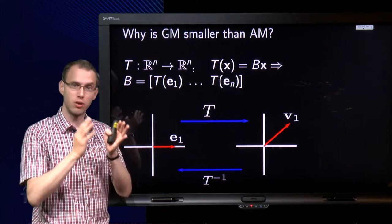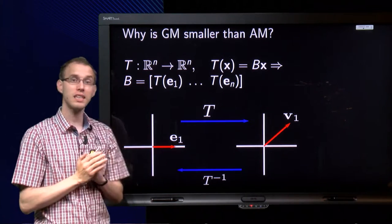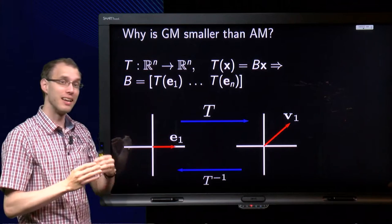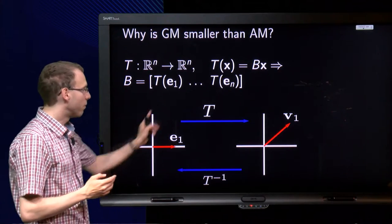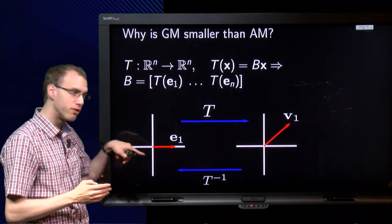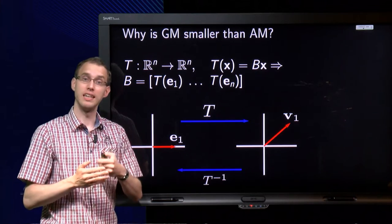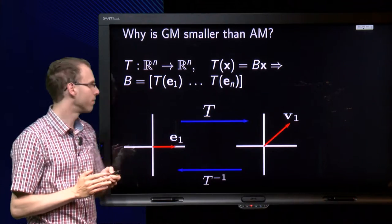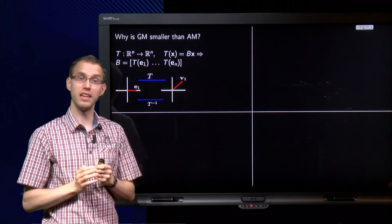If you have a matrix with its first column, say v1, then the image of e1 is v1, and the inverse image of v1 is e1. That is the result we are going to need.